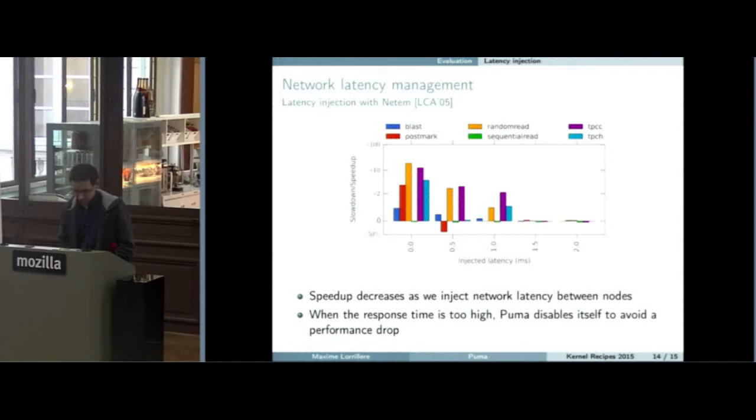This is with network latency injection. We use NetEM to inject latency. Zero means no latency injection, so this is our baseline. It was like 200 microseconds latency between VMs. As we can see, when we add latency, after one millisecond of injected latency, PUMA is disabled. And so there is no speedup because PUMA is disabled, but there is also no slowdown.